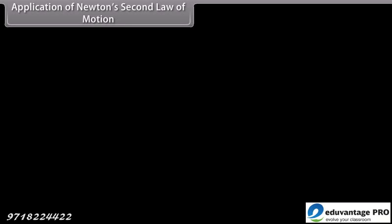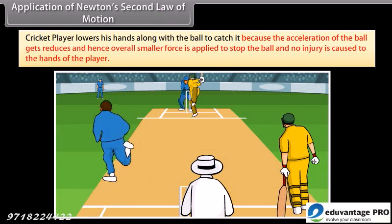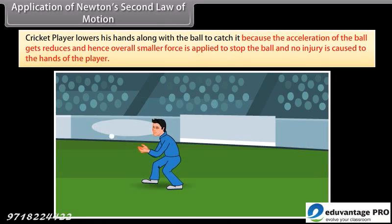Application of Newton's second law of motion. Cricket player lowers his hands along with the ball to catch it because the acceleration of the ball gets reduced, and hence overall smaller force is applied to stop the ball, and no injuries caused to the hands of the player.